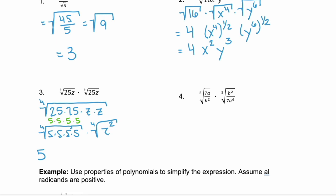We can use rational exponents to simplify the fourth root of z squared. That would be z squared to the power of one fourth, giving us 5 times z to the power of one half. And remember what the power of one half is? That's the same as a square root. How crazy — this one goes from a fourth root down to a simplified square root.